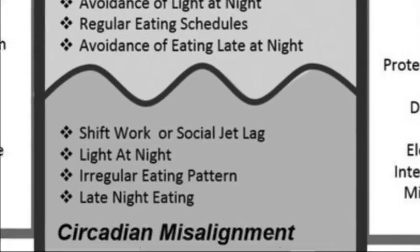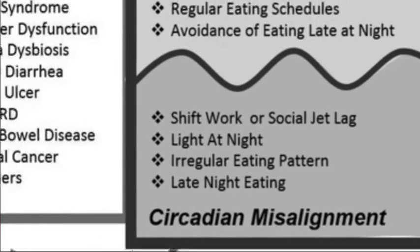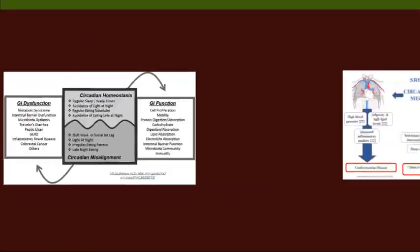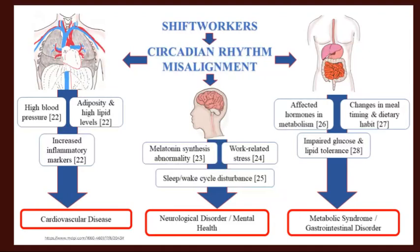When we're in sync with our circadian environment everything functions well. But if we're not in sync — as is the case for shift workers working late at night and eating irregularly — unfortunately the gut becomes dysfunctional, resulting in metabolic syndrome, ulcers, inflammatory bowel disease, and colorectal cancer. This is the case for many of our bodily systems; living out of sync with our circadian rhythms results in many poor health outcomes.